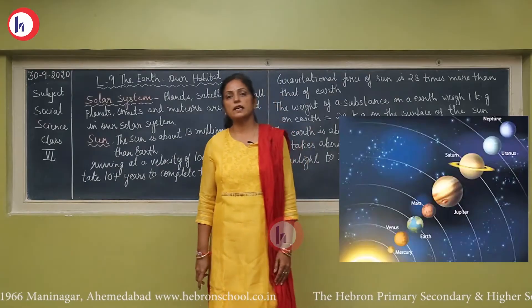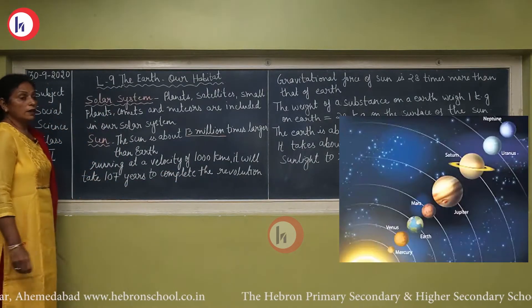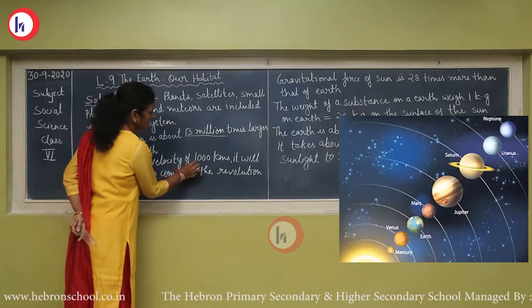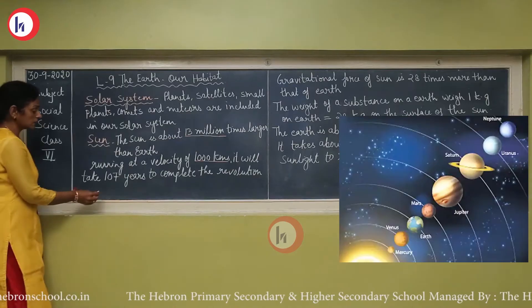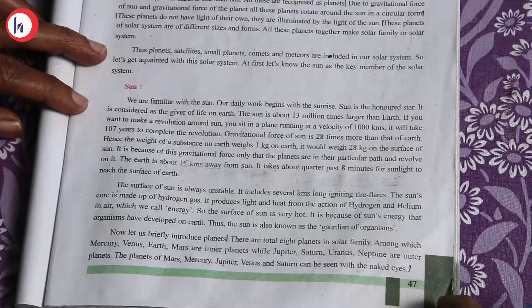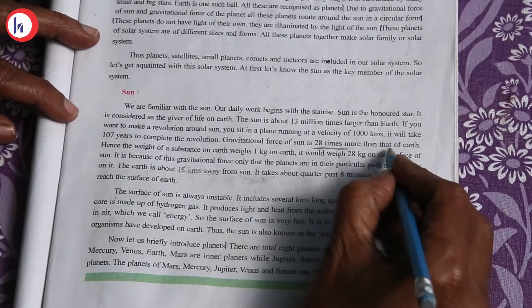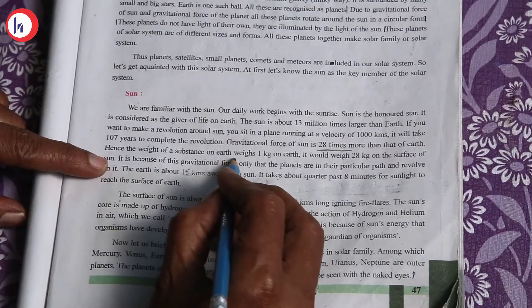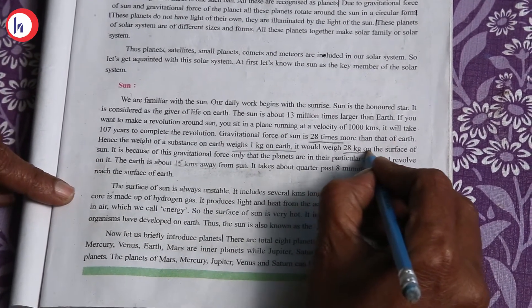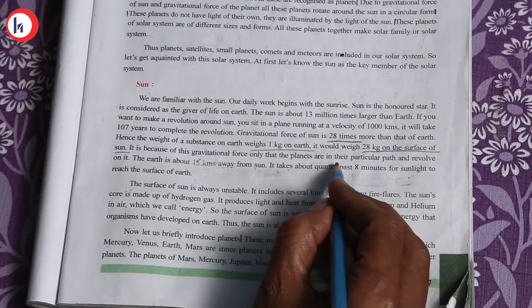We are familiar with the sun — our daily life begins with sunrise. The sun is about 30 million times larger than the Earth. If you sit in a plane running at a velocity of 1,000 kilometers per hour and want to complete a revolution around the sun, it would take 107 years. The gravitational force of the sun is 28 times more than that of the Earth, so 1 kg on Earth equals 28 kg on the surface of the sun. It is because of this gravitational force that planets stay in their particular paths.